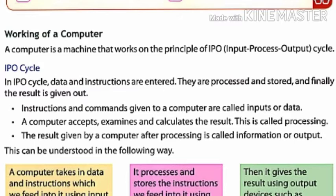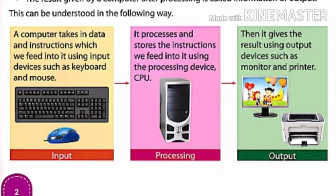Now, the last. The result given by a computer after processing is called information or output. The final result the computer gives us, we call it output. This can be understood in the following way.